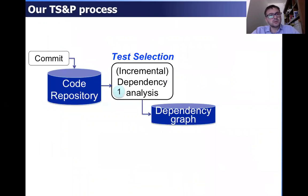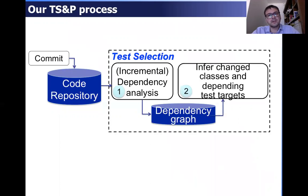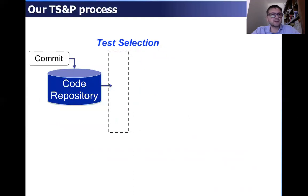The process foresees that at each commit, the test selection process updates the dependency graph based on the code that has been committed. From this graph, we infer the changed classes and the depending test targets. The output is the set of tests that need to be prioritized in that cycle.